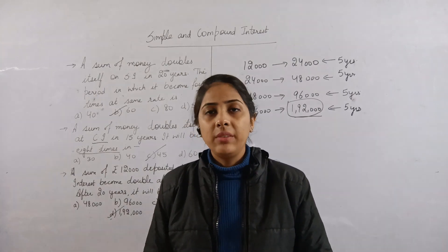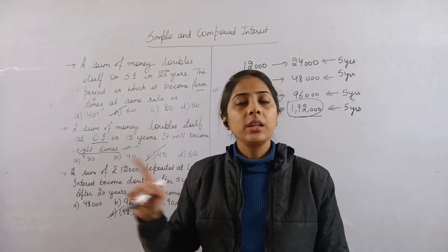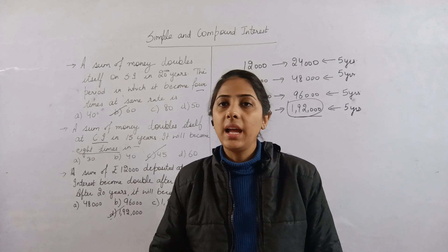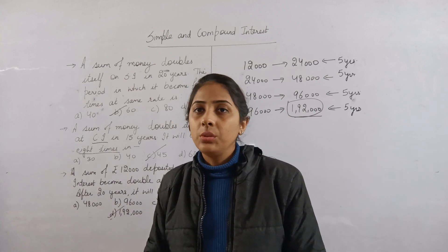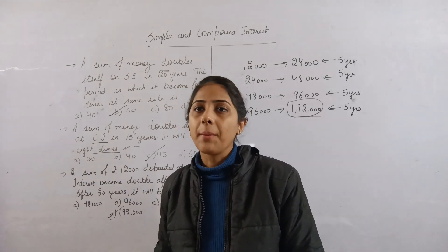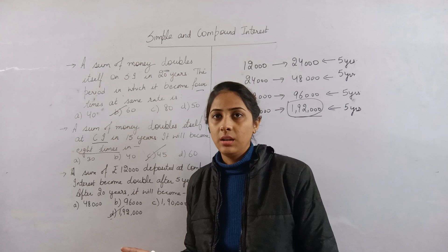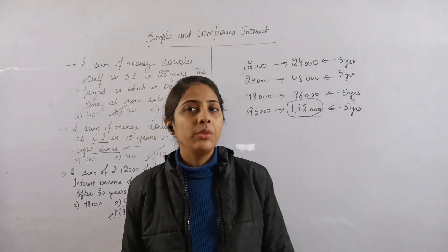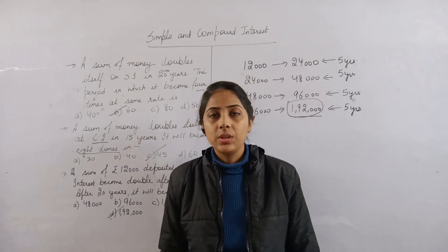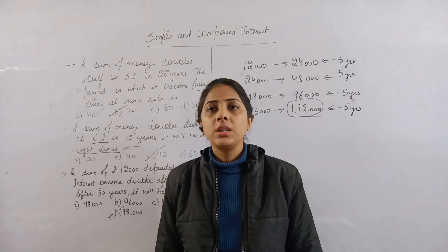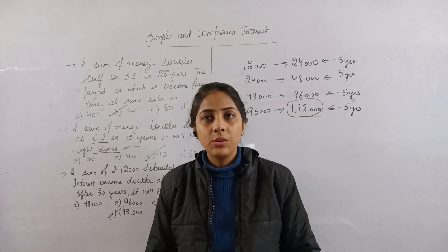The key things to remember: when it's simple interest, the interest adds linearly from 1 to 2 to 3. But when it's compound interest, it doubles: 1 to 2, 2 to 4, 4 to 8. So understand whether the question is asking about simple interest or compound interest. Hope you found today's video helpful and the questions were clear and interesting.